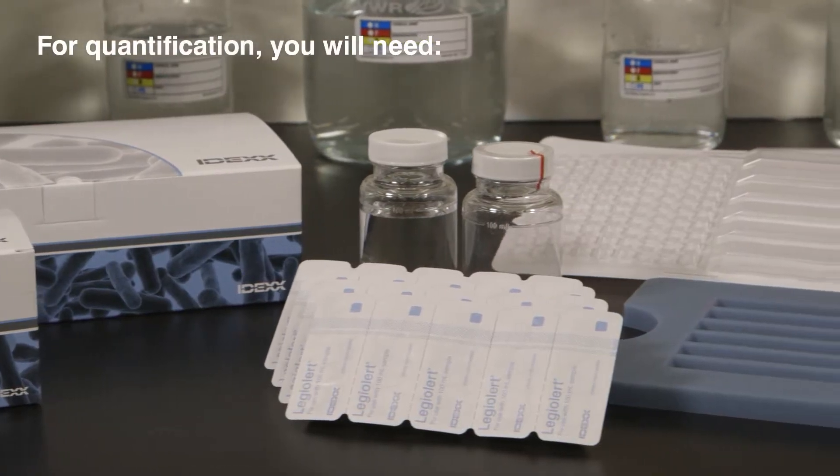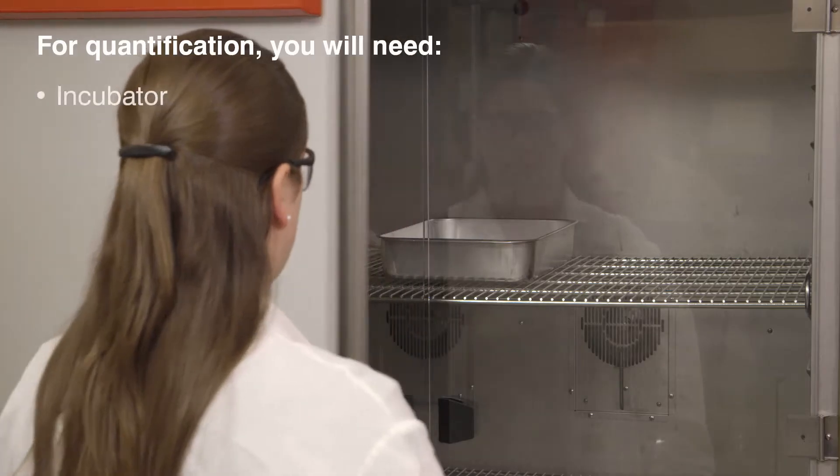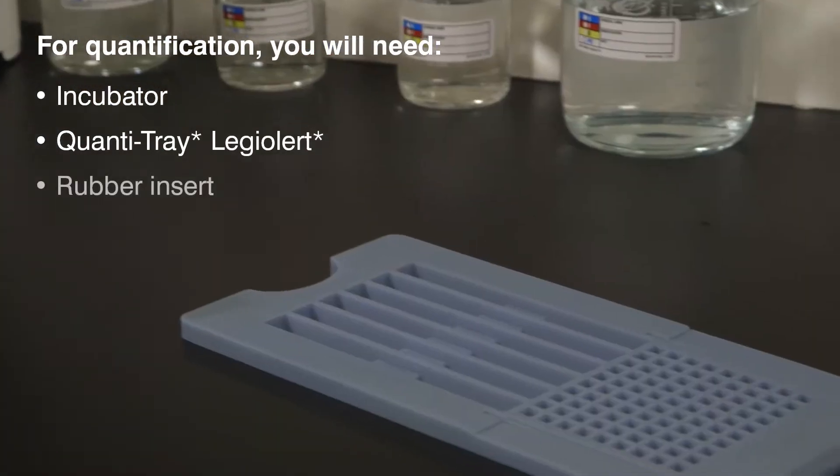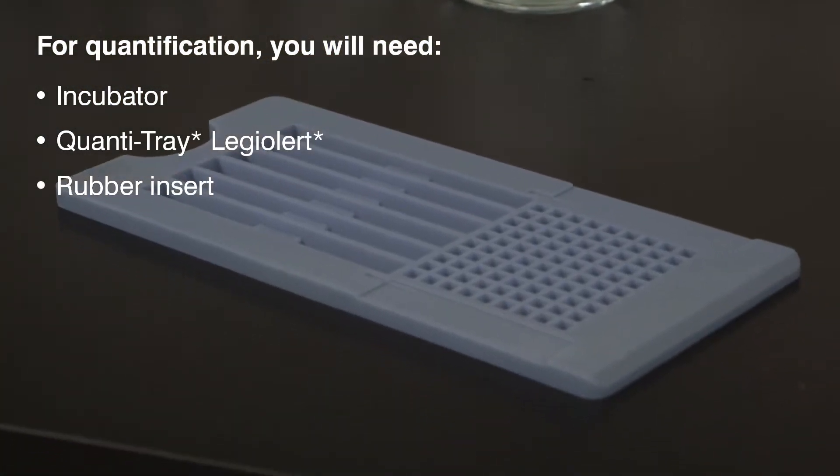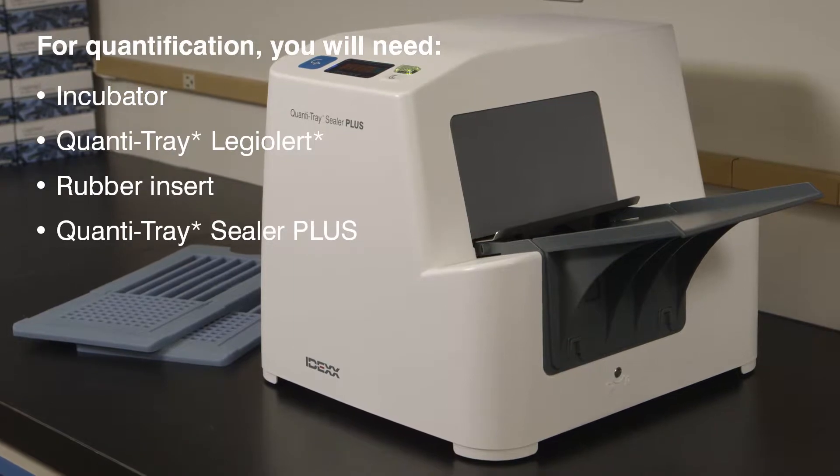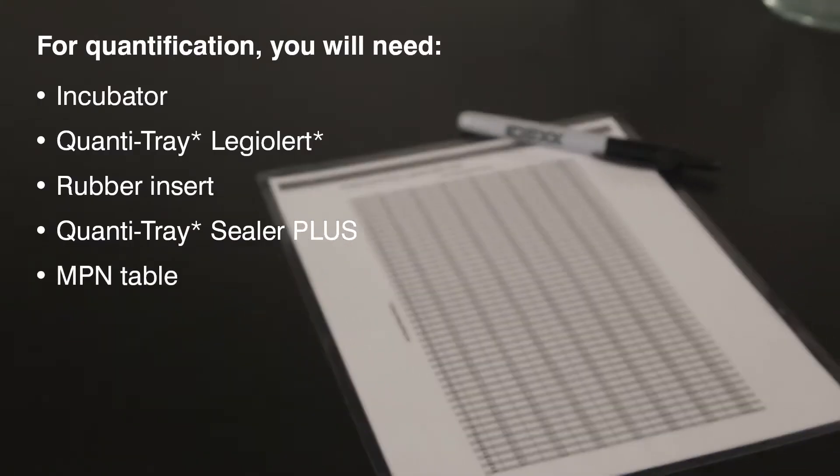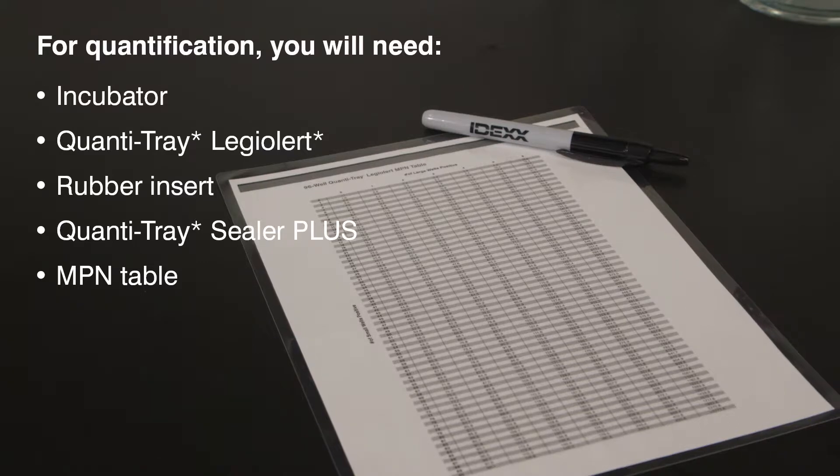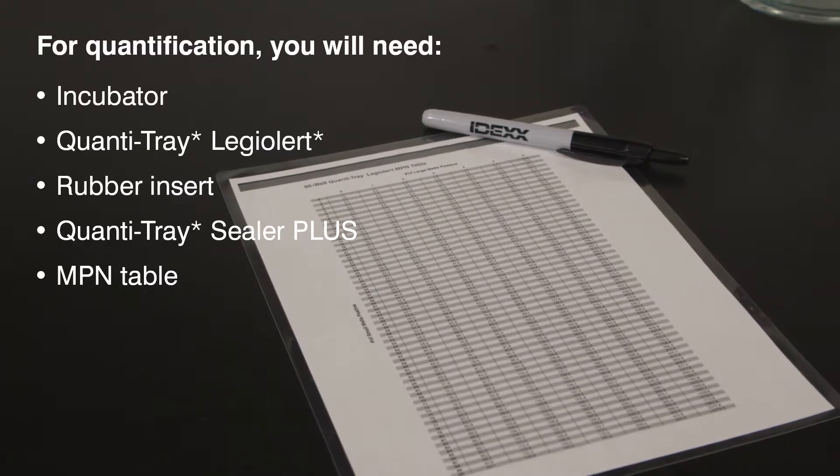For quantification, you will need an incubator, a QuantiTray LEG-ALERT rubber insert, a QuantiTray Sealer Plus, and the included most probable number table or the IDEX automated MPN generator program found at IDEX.com.